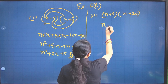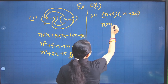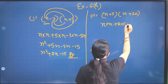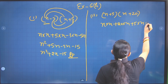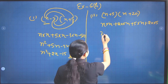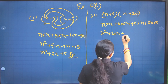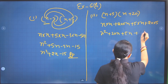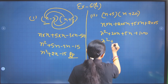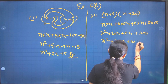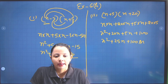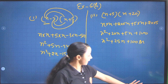Next, we do x into x, plus 20 into x, plus 5 into x, and plus 20 into 5. So we get x squared plus 20x plus 5x plus 100, which gives x squared plus 25x plus 100. The answer is clear.